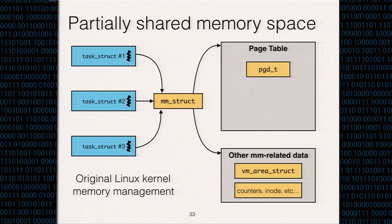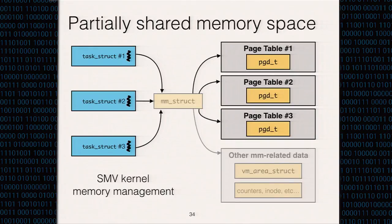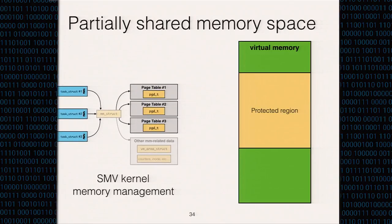This is how the original Linux kernel manages a process and its threads' memory space. There are three threads in this example — they all share the same page table and memory management related metadata. But in SMVs, we don't want threads to have global access to the entire process address space. Therefore, we need to separate their page tables. All threads still mutually agree on the process address space, but with different page tables, threads are actually accessing the same virtual addresses with different permissions. This allows thread one to read and write to the protected region, thread two to only read, while thread three has no permission to access the region at all.